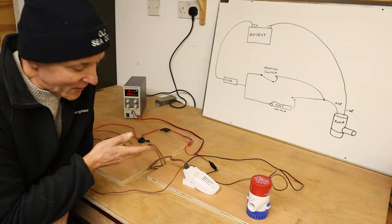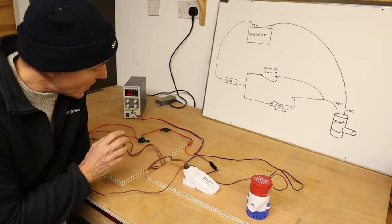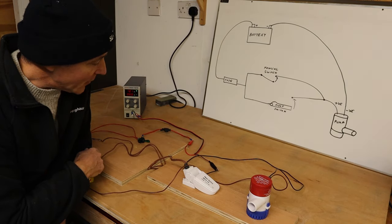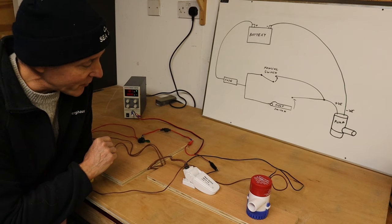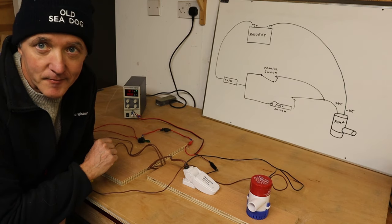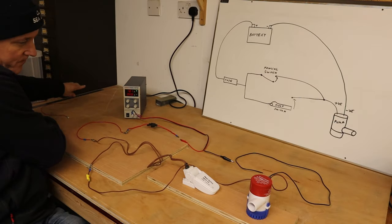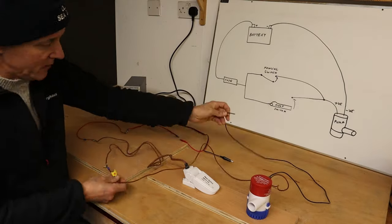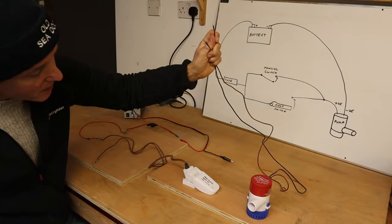We have a negative and a positive from the bilge pump. The negative is really easy - that just goes straight to the negative of the power source, which on your boat would be the battery or the wire coming from the battery.